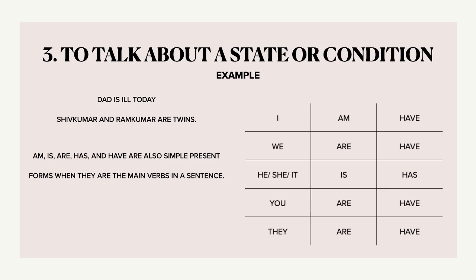We use simple present to talk about a state or condition. For example, Dad is ill today. Shivkumar and Ramkumar are twins. This speaks about a state or condition of persons or a thing. Whenever we use 'am', 'is', 'are', 'has', and 'have', these are also simple present forms when they are the main verbs in a sentence.